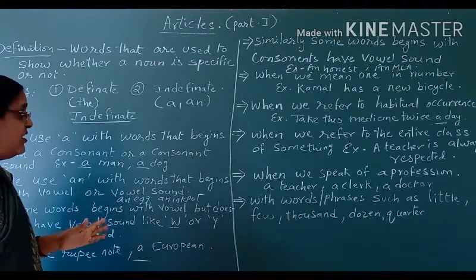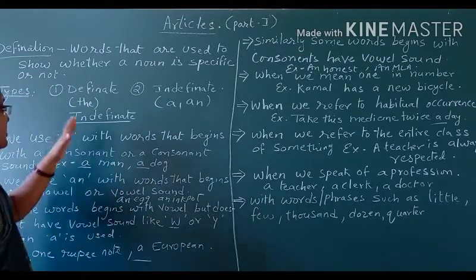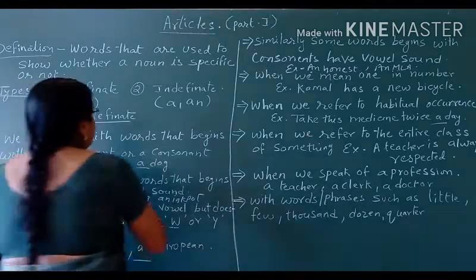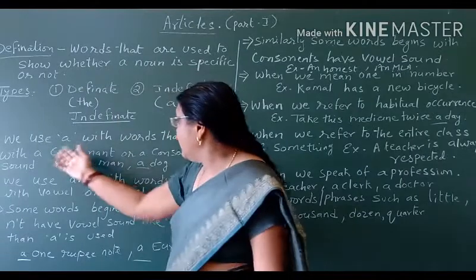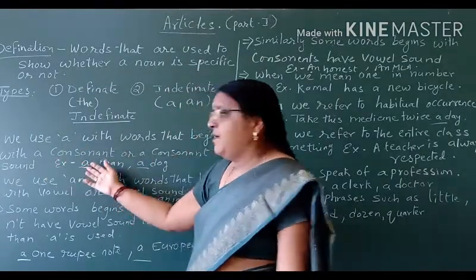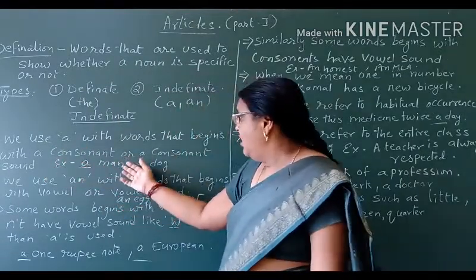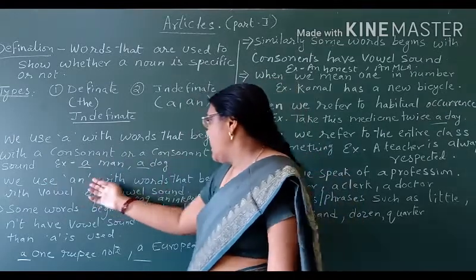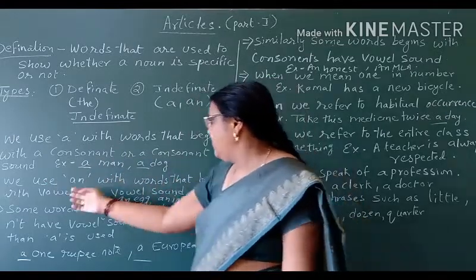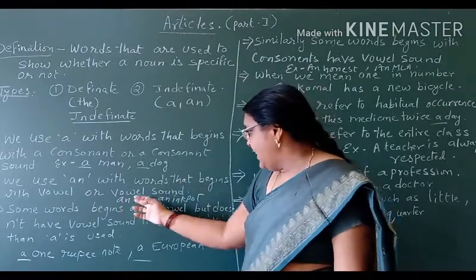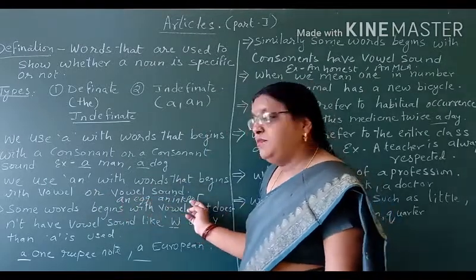We will study about how the indefinite article is used. We use 'a' with words that begin with a consonant or a consonant sound — for example: a man, a dog. We use 'an' with words that begin with vowels or a vowel sound — like: an act, an import.